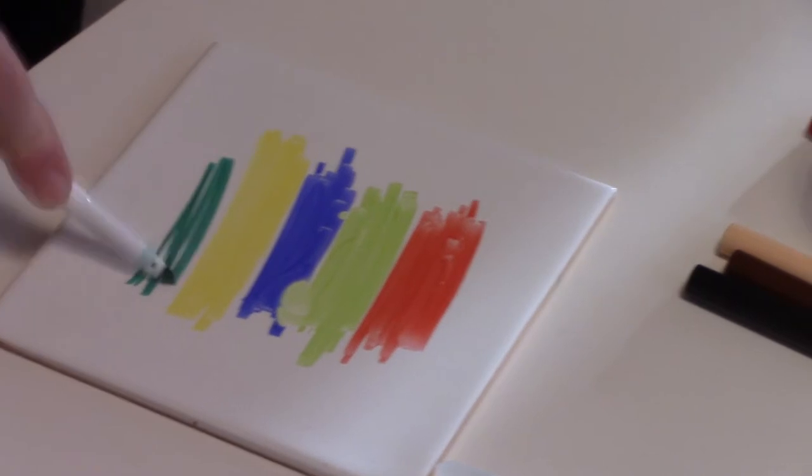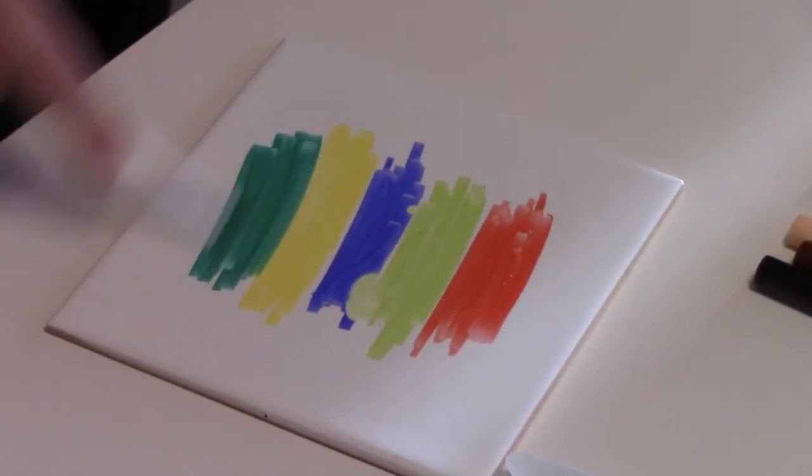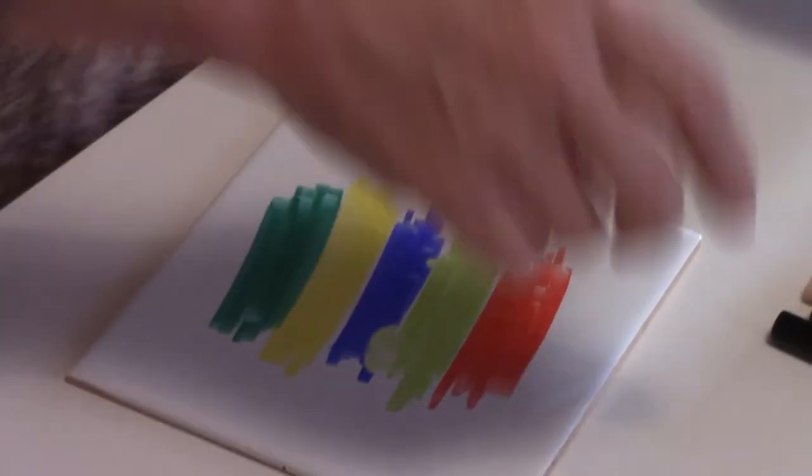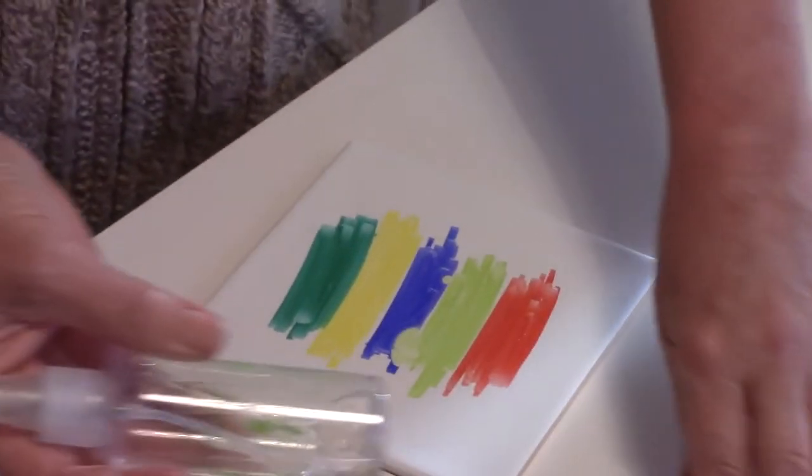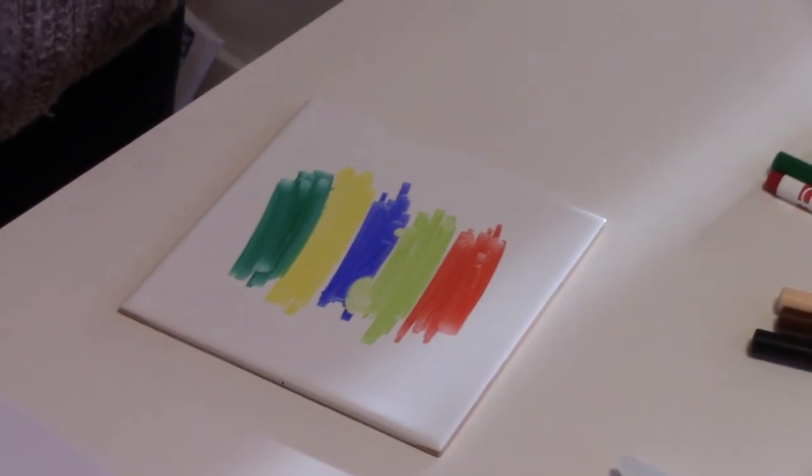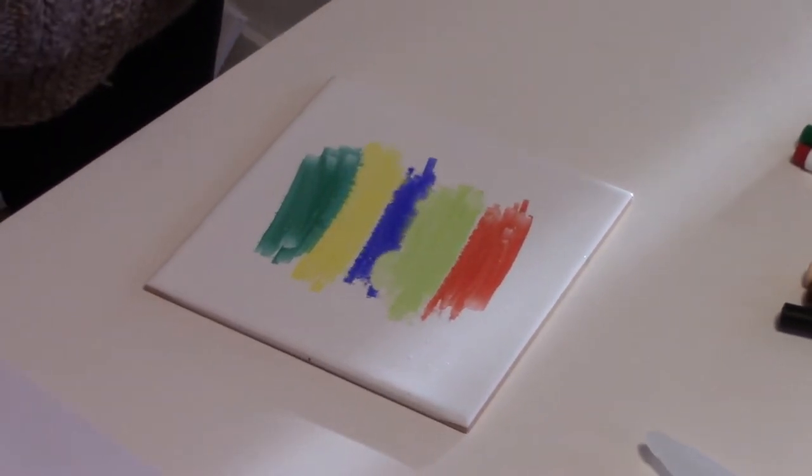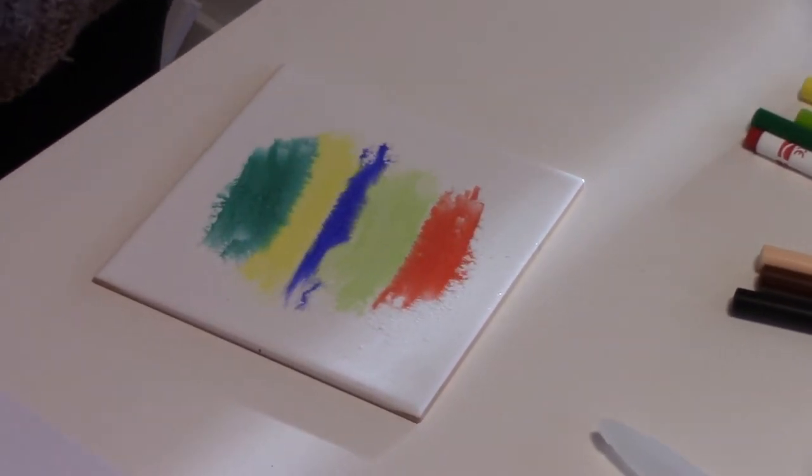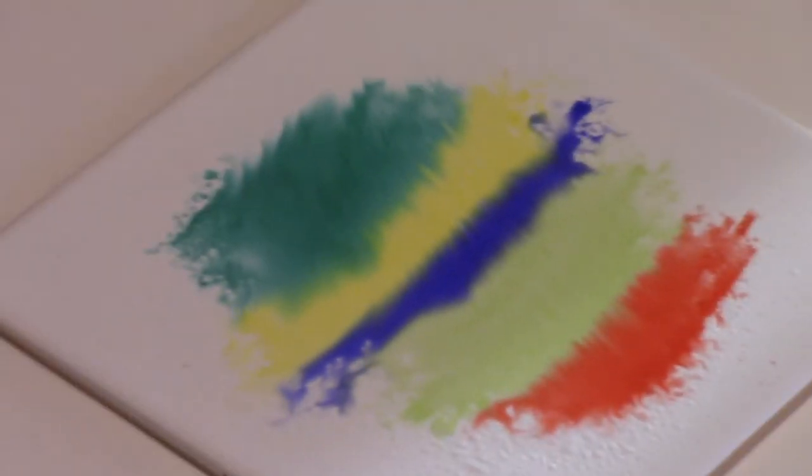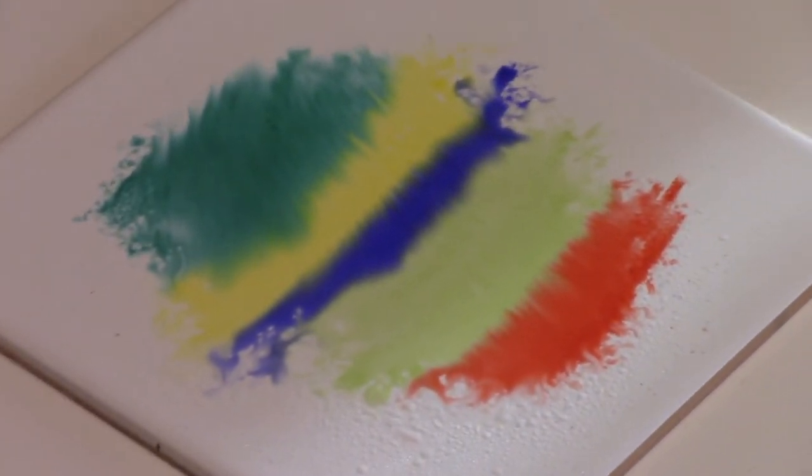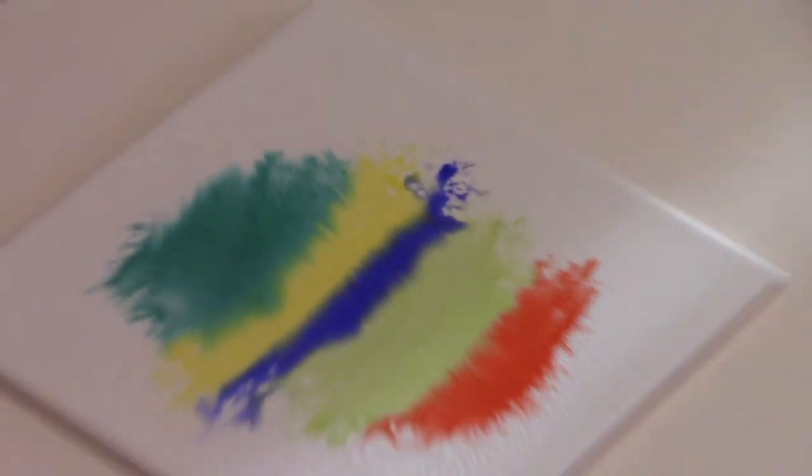So what I'm going to do is simply take some water and spray the Crayola markers, and they start to mingle and merge as you can see. Now this technique is specifically for putting down a background color, and if you want to stamp on top of it or whatever you want to do on it.